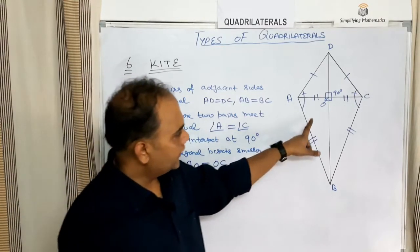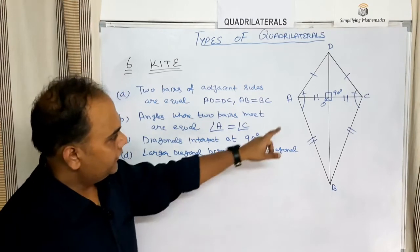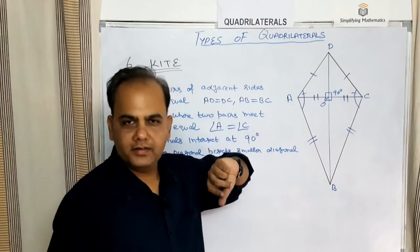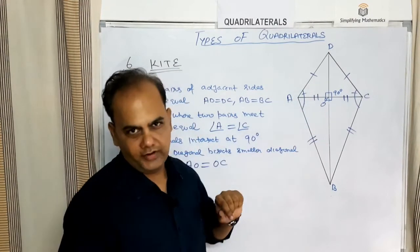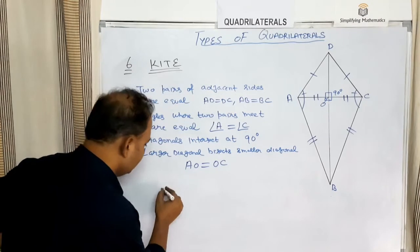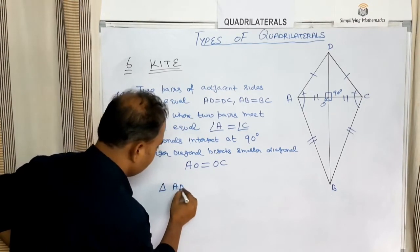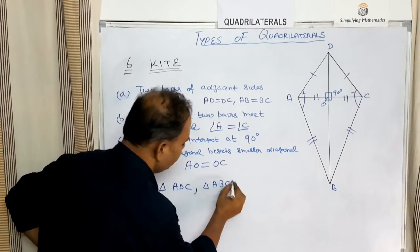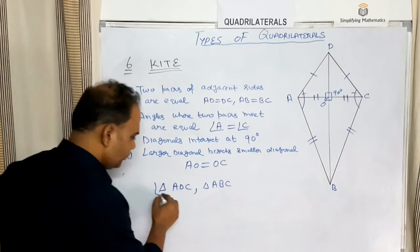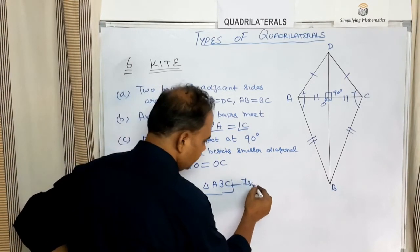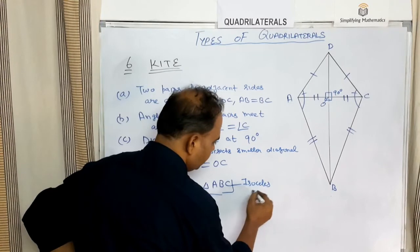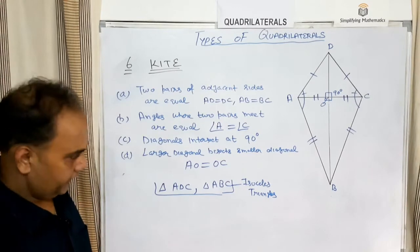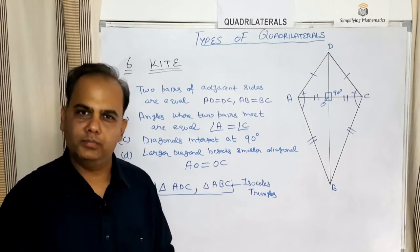Additionally, the diagonal AC divides the kite into two isosceles triangles — triangle ADC and triangle ABC. This is all about the properties of a kite.